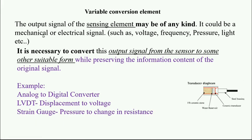It is necessary to convert the output signal from the sensor to some other suitable form while preserving the information content in its original form. One example is that most of the things nowadays are digital in nature. We are getting the data from the primary sensing element in analog form, so first we have to convert it into digital and load it in digital form, that is by an analog to digital converter.